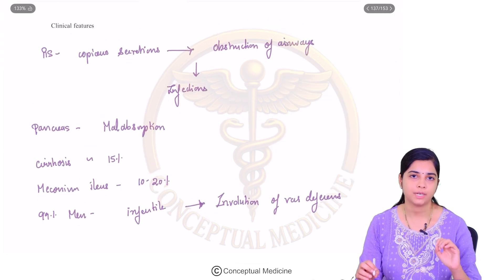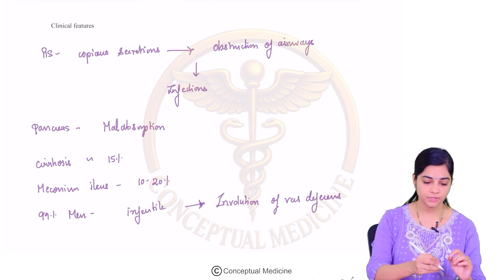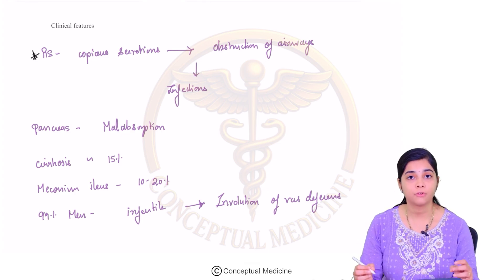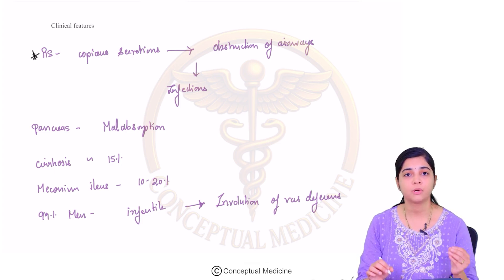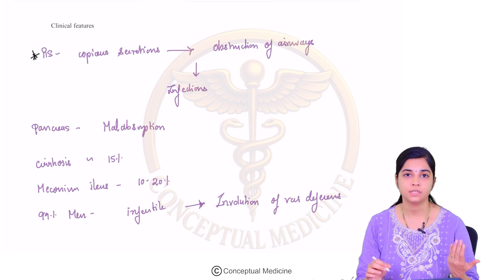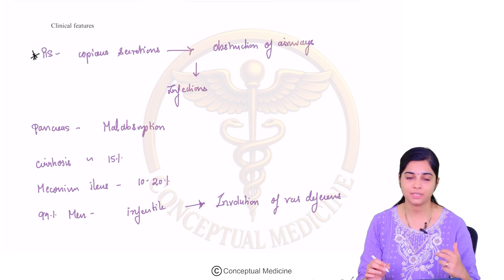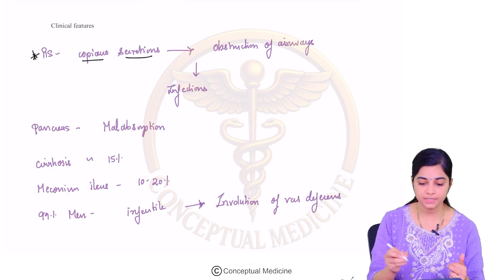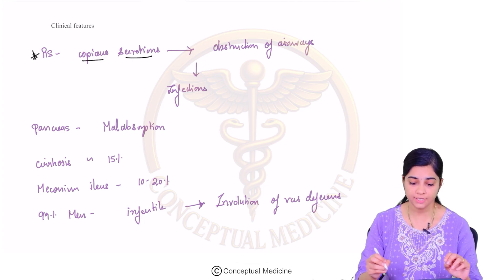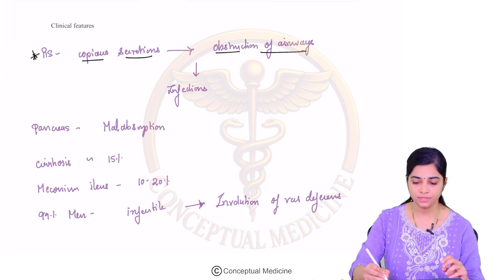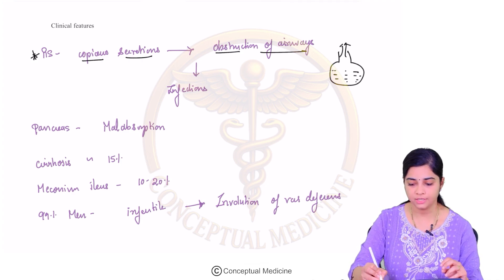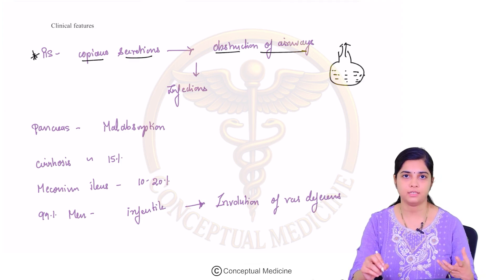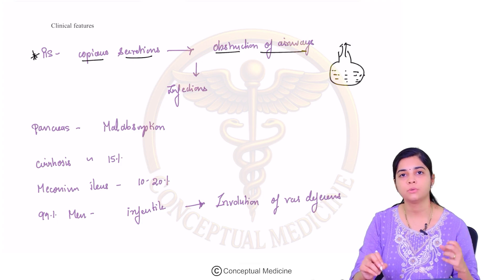Now let us look at the clinical features. The first and most important is involvement of the respiratory system. The CFTR gene normally forms periciliary fluid and enhances the ciliated columnar epithelium in removing excessive secretions. When this fails, there is production of thick, copious secretions that are not cleared from the airways, causing obstruction.